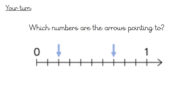Here's your last in-lesson task before you move on to your worksheet. Two arrows are on a number line — which numbers are they pointing to? Remember to count up in tenths and think about the whole numbers on either side. We're counting between zero and one. Pause the video, count along the number line, and then come back.